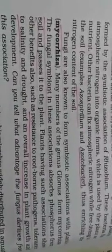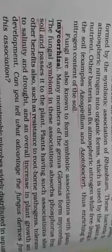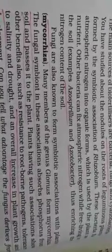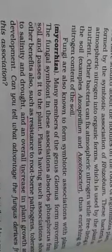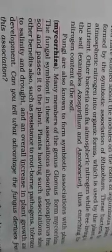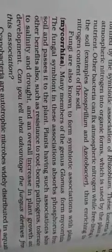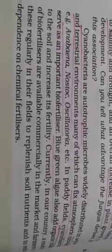Fungi also help increase soil quality. Fungi form symbiotic associations with plants called mycorrhiza. Many members of the genus Glomus form mycorrhiza, and the fungal symbiont absorbs phosphorus from the soil and passes it to the plant. Plants with such associations also show resistance to root-borne pathogens, tolerance to salinity and drought, and an overall increase in plant growth and development.